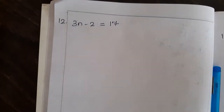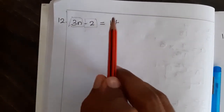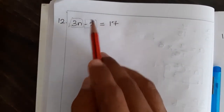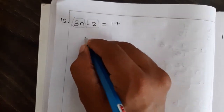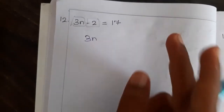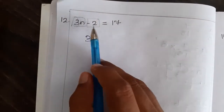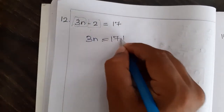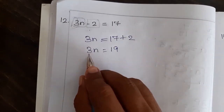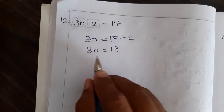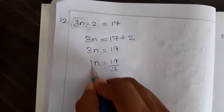Next problem: 3n minus 2 is equal to 70. Here you can see two terms in the LHS — one term is with variable, another is without variable. First, we will transpose the number only. The term without variable is minus 2. So first we will transpose this, then we will transpose with the variable. Minus 2, if you transpose, it will become plus 2. So 3n is equal to 70 plus 2, which is 72. Now we can bring the 3 to the next side — 3 and n are multiplied, so if you bring it to this side it will become division. So n is equal to 72 by 3.